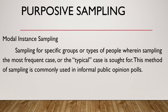The first kind of purposive sampling is modal instance sampling — sampling for specific groups or types of people wherein the most frequent case or the typical case is sought for. This method is commonly used in informal public opinion polls. For example, if I am conducting a survey in a school and UMES has the most number of students, since they are the most frequent case, I will obtain my sample from the UMES students.